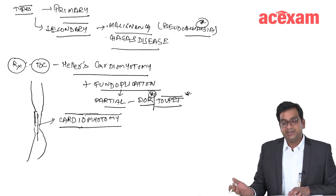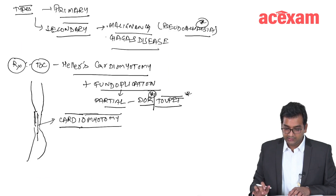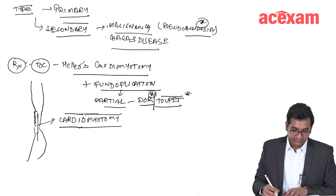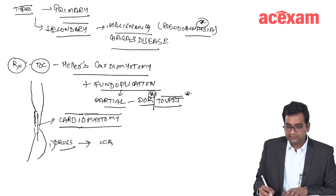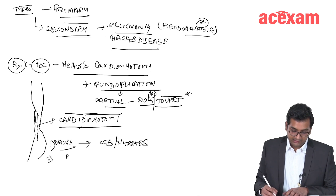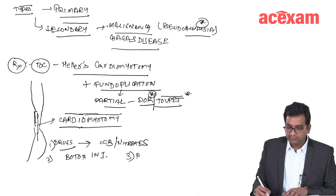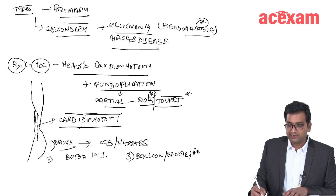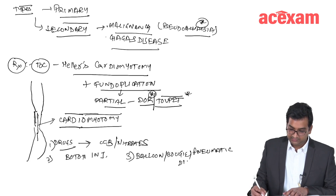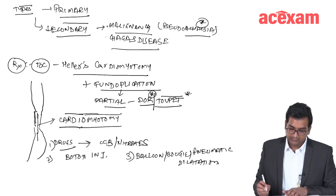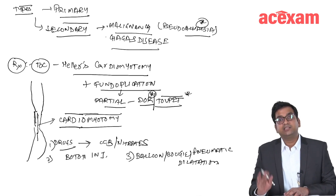Other treatment options for achalasia include drugs such as calcium channel blockers or nitrates to relax the sphincter, Botox injection, and balloon or pneumatic dilatation endoscopically. However, the treatment of choice remains Heller's cardiomyotomy.